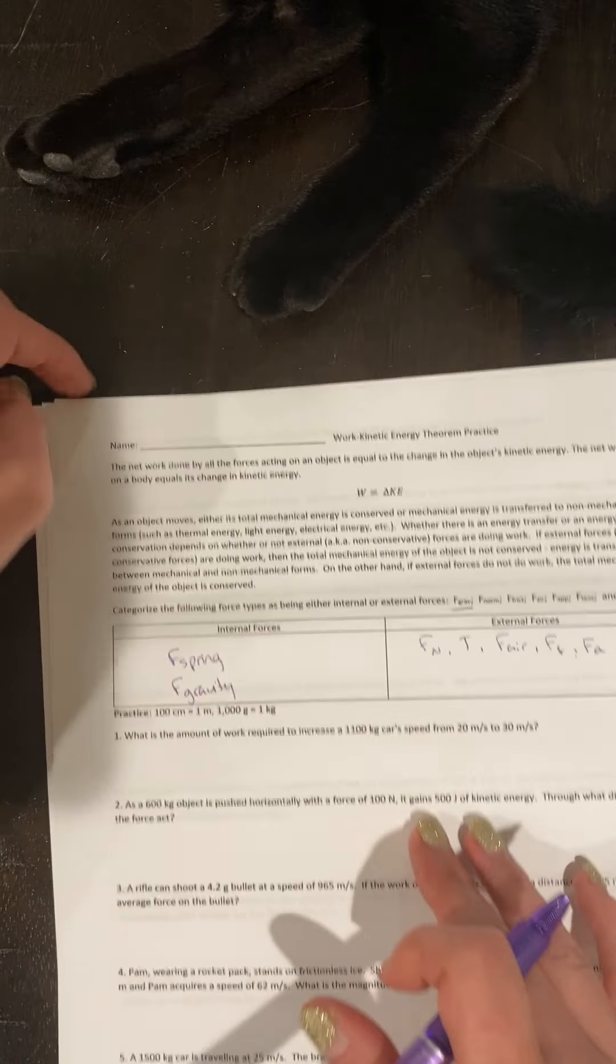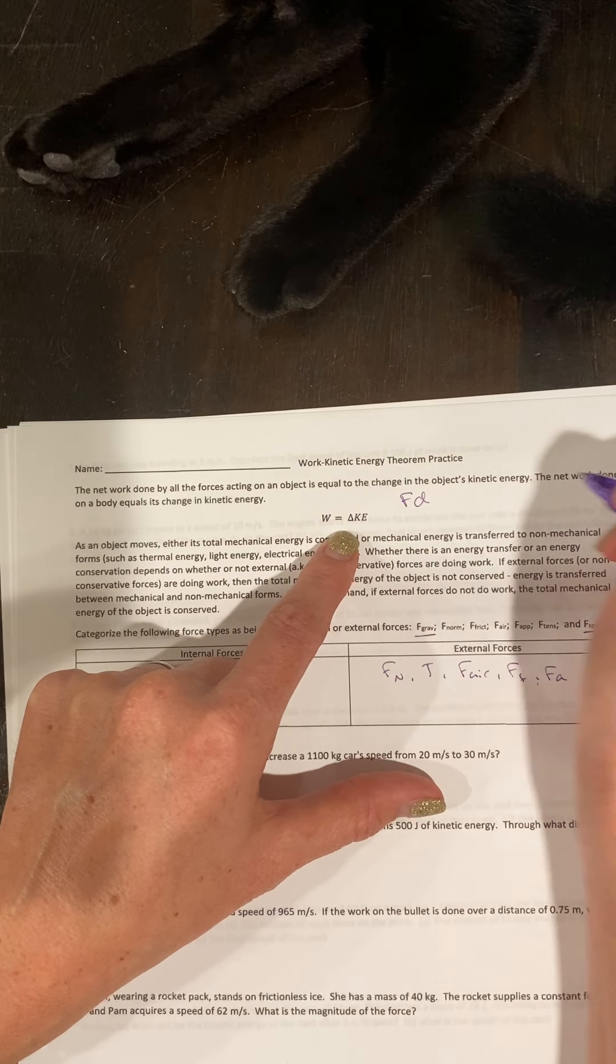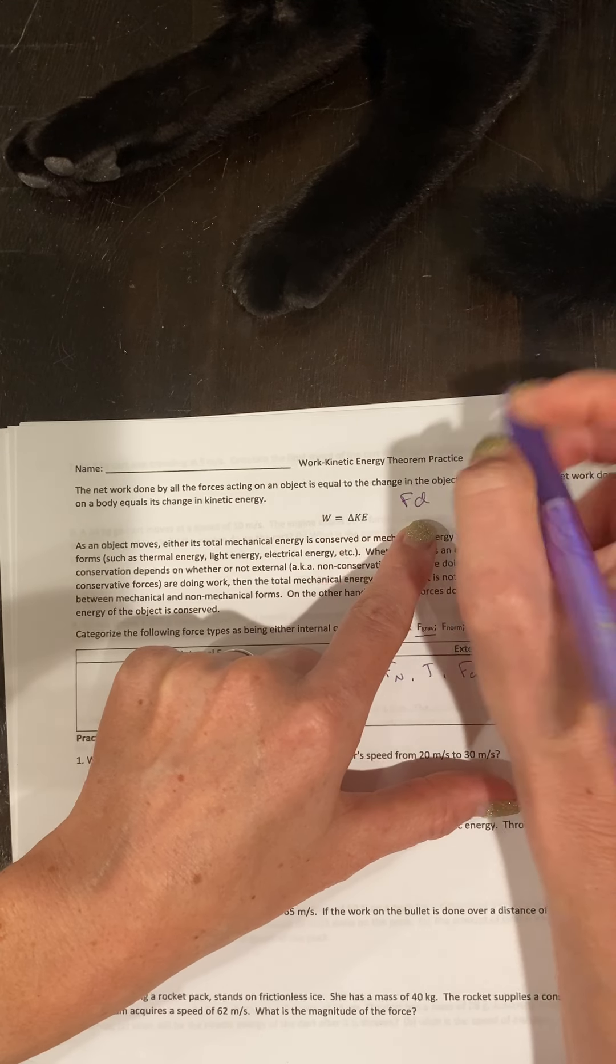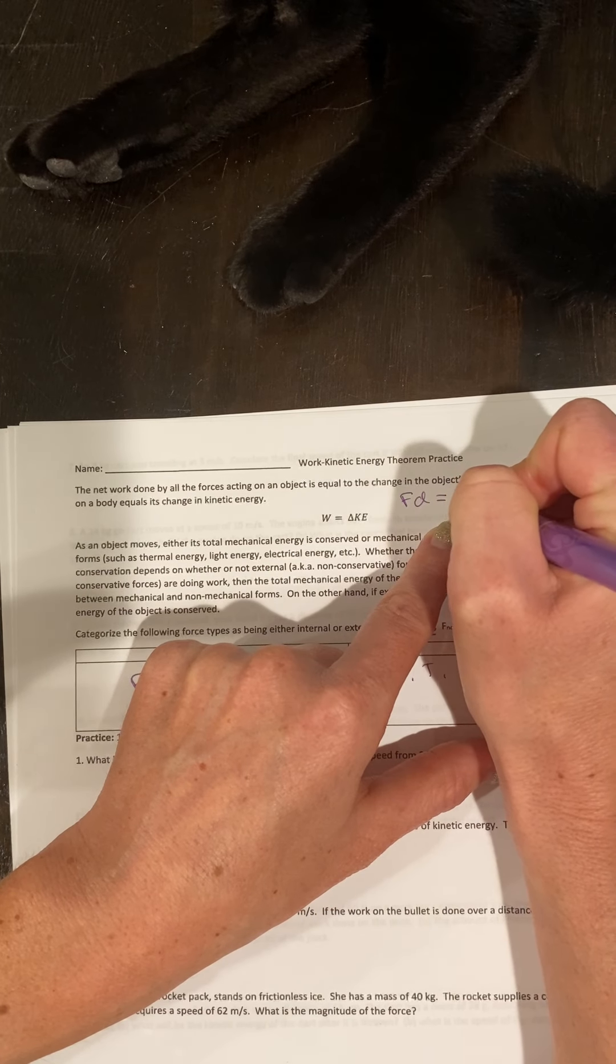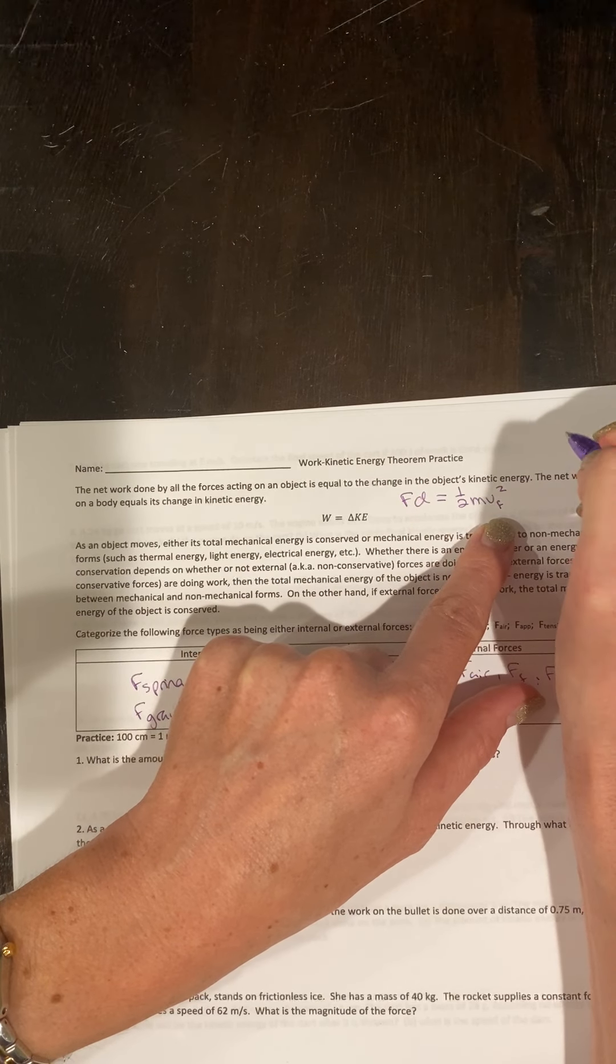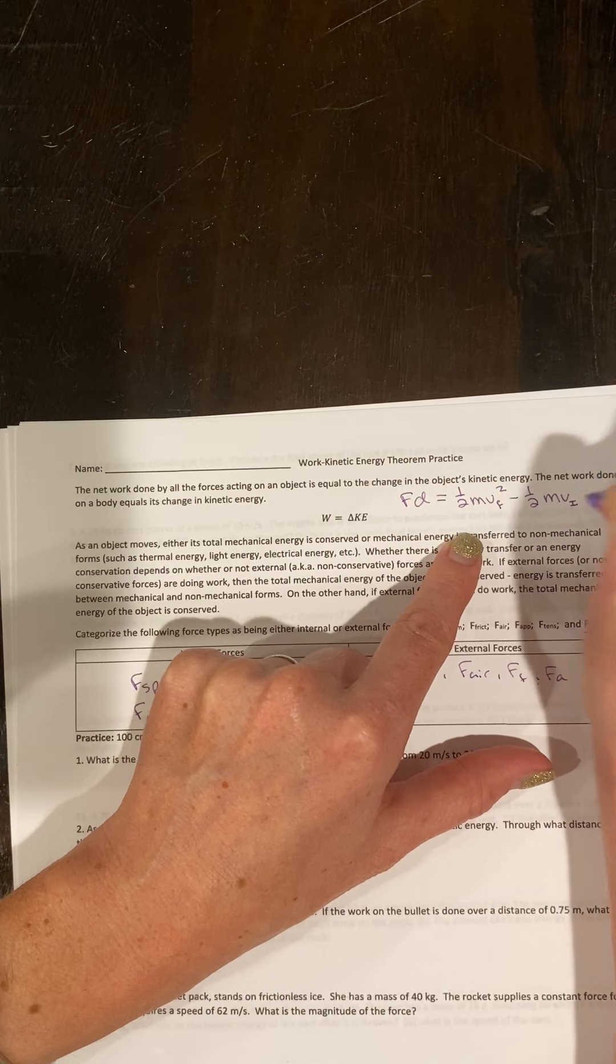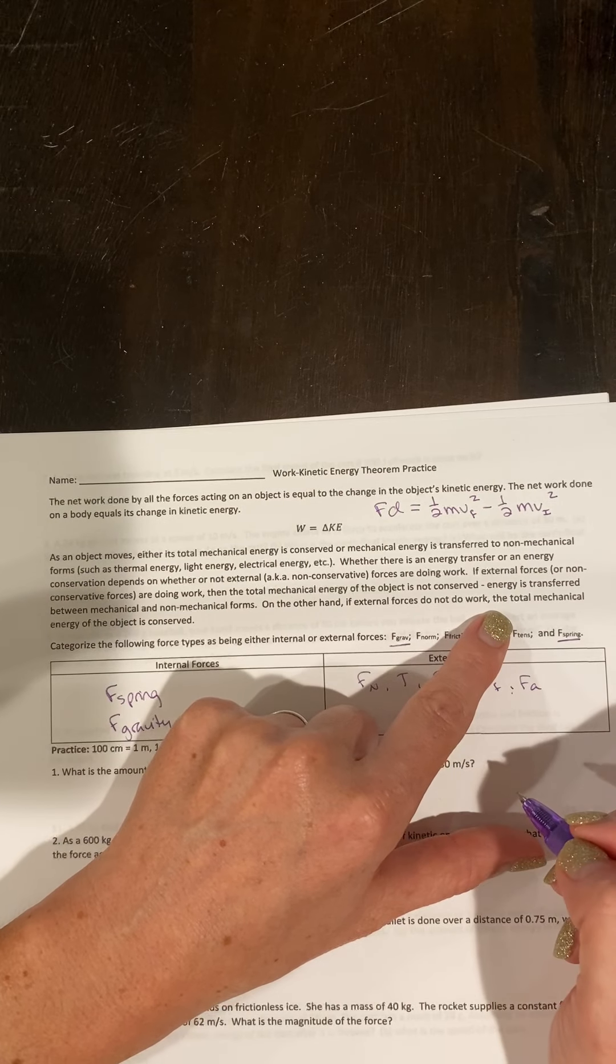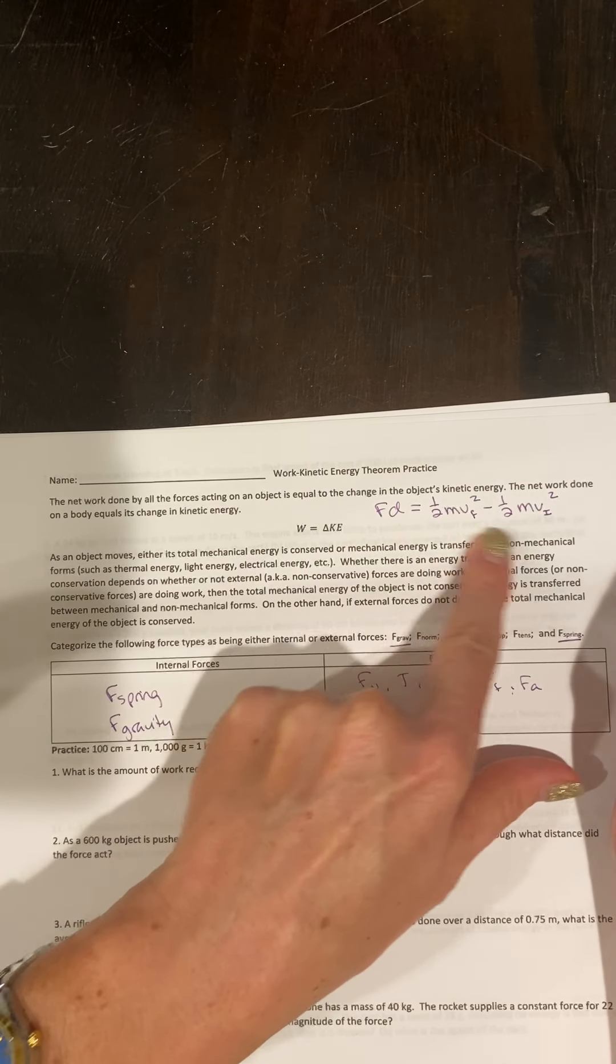So let's use our equation. Our work changing kinetic energy can be expanded. My work is my force times my displacement. You can add the theta if you need to. And you're changing kinetic energy - changing anything is going to be your final minus your initial. So my final kinetic energy minus my initial kinetic energy. This is our equation in its long form.